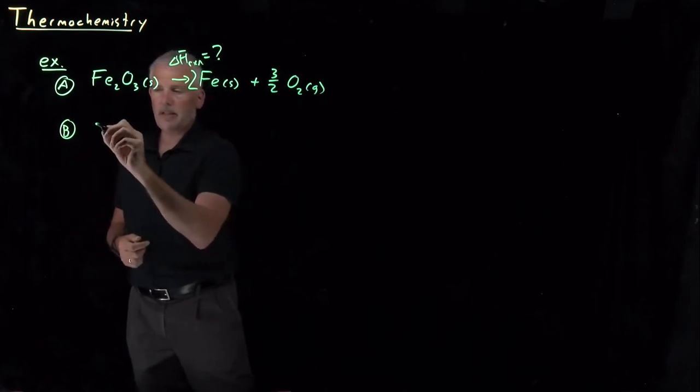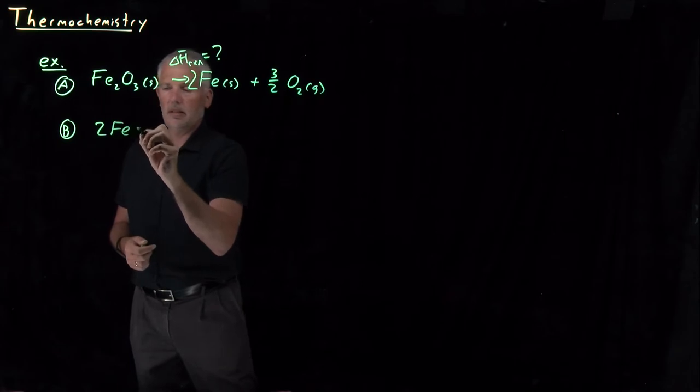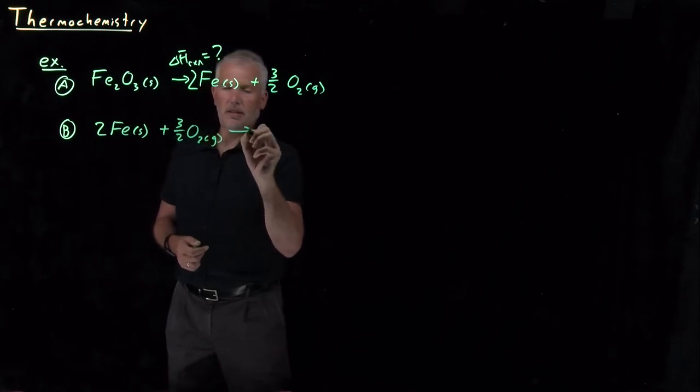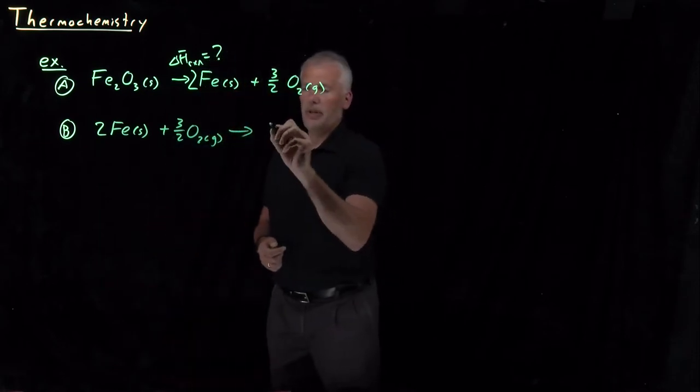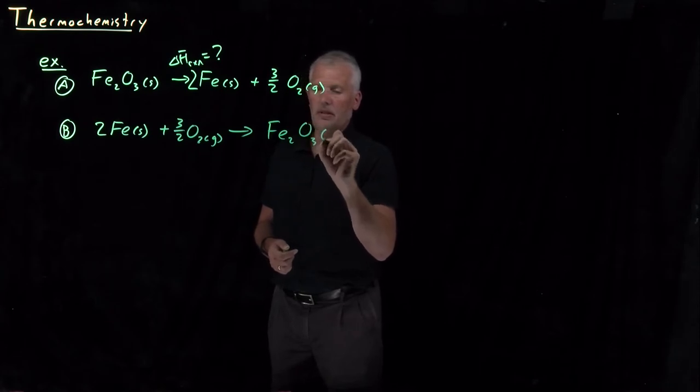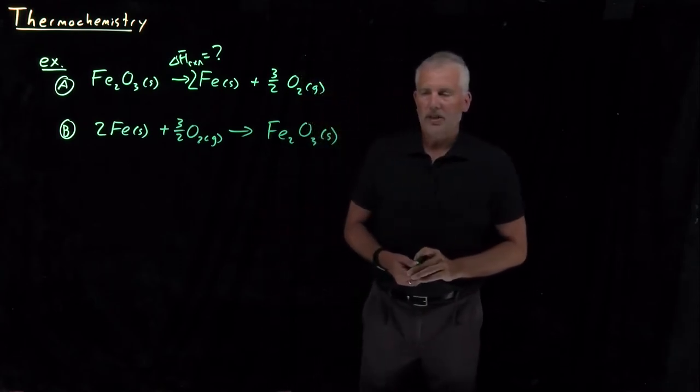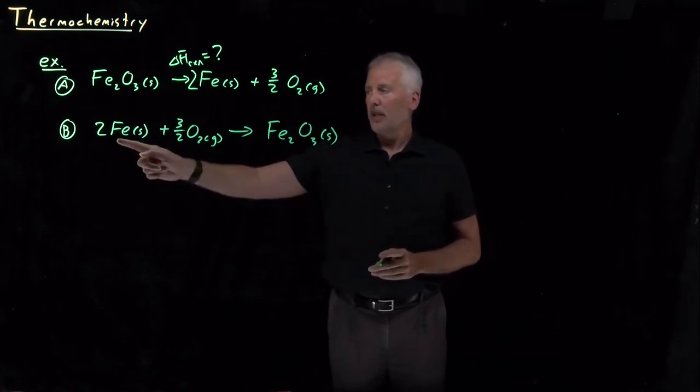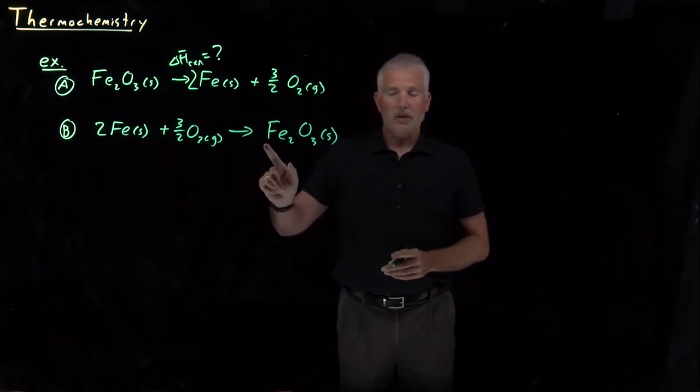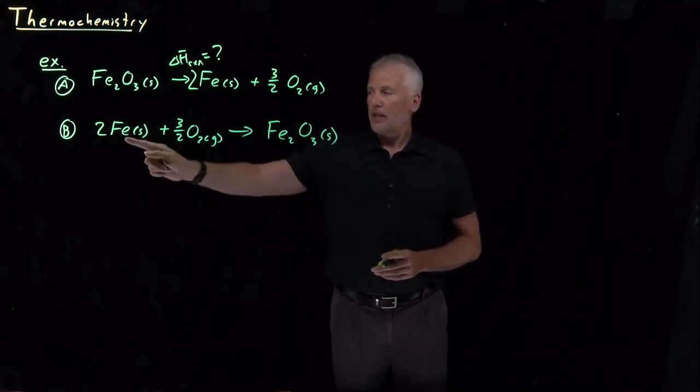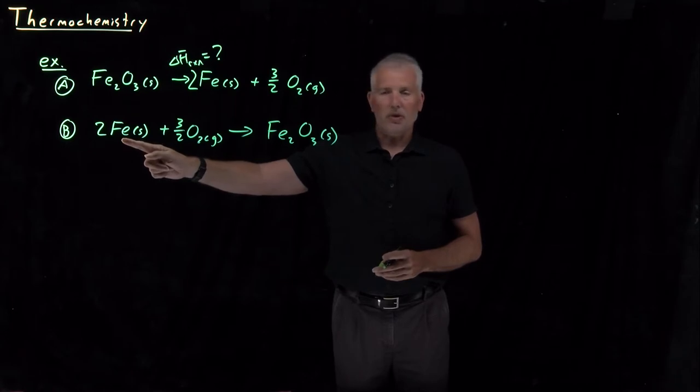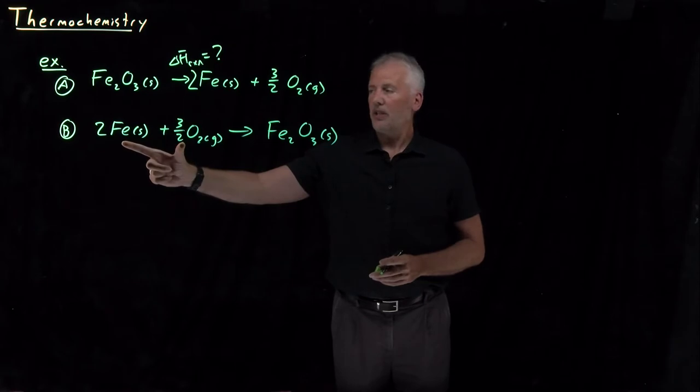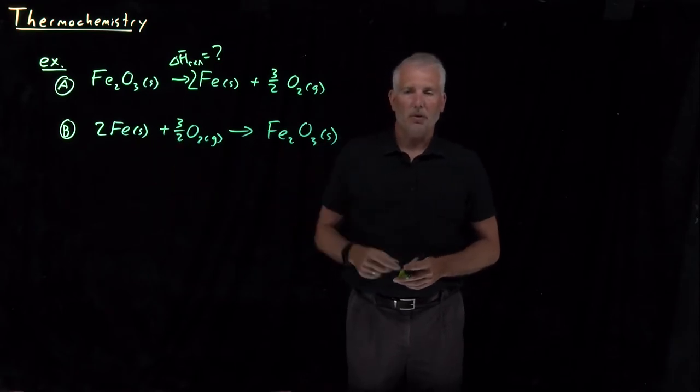If I flip this reaction around and say iron solid and oxygen gas forming Fe2O3, the reverse of the reaction I was originally interested in, I can make that reaction happen without much difficulty. If I take some iron, it'll rust very slowly in the presence of oxygen, but if I shave the iron down into iron filings so it's got a lot more surface area, perhaps give it a little spark to initiate this combustion process, I can cause iron to pretty quickly combust and form Fe2O3.